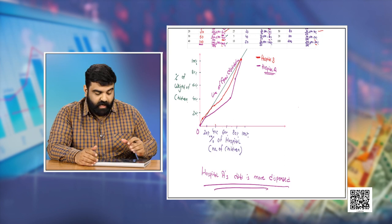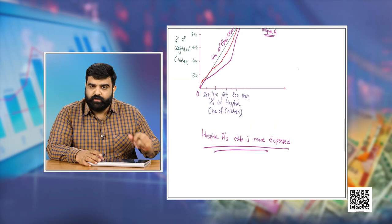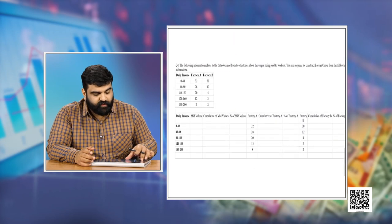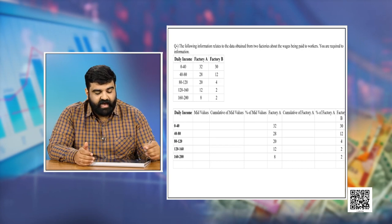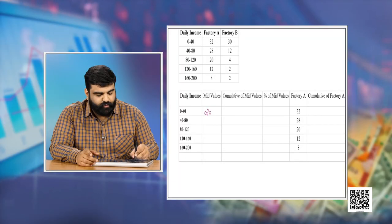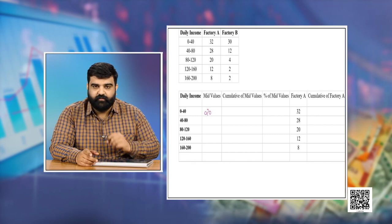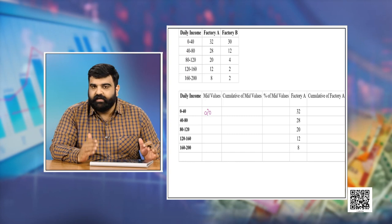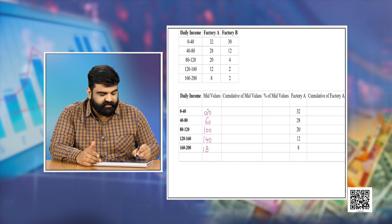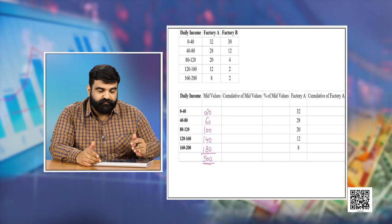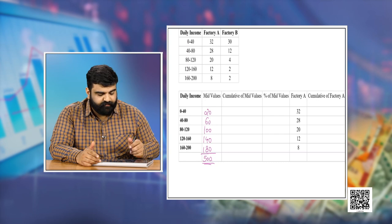Now let's move to the next question about a continuous series — two factories giving daily wages to their workers. We need to find which factory's data is more dispersed. First, we find the mid values of the class intervals: l1+l2 divided by 2. The mid values are 20, 60, 100, 140, and 180, with a total of 500.